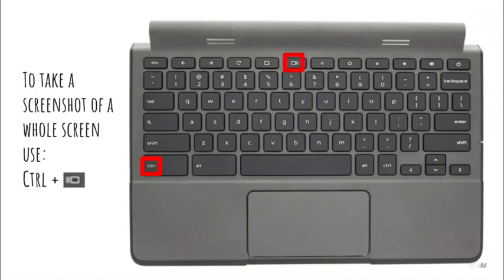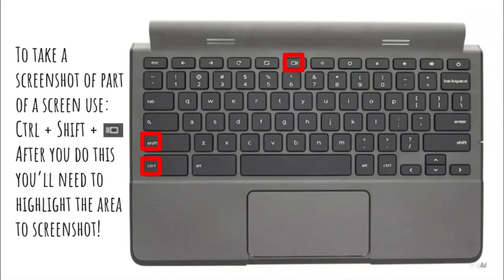Taking a screenshot can also be very important, especially if you've completed a task on another web page and you need to provide proof of your completion. You can use CTRL and the window selector button that's above the 6, or you may want to just take a screenshot of part of your screen, and you can use CTRL-SHIFT and the window selector button.